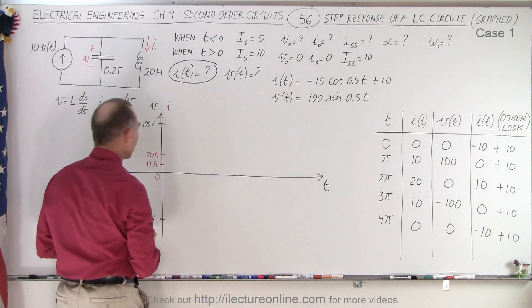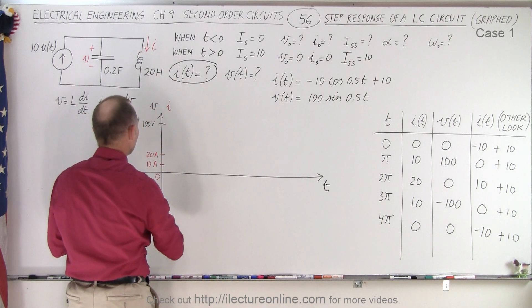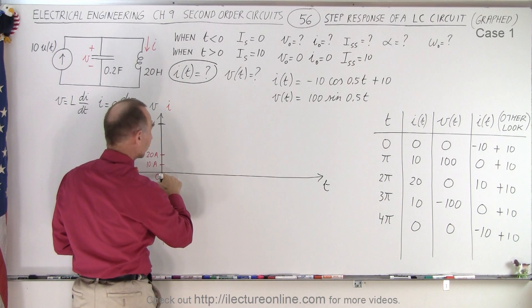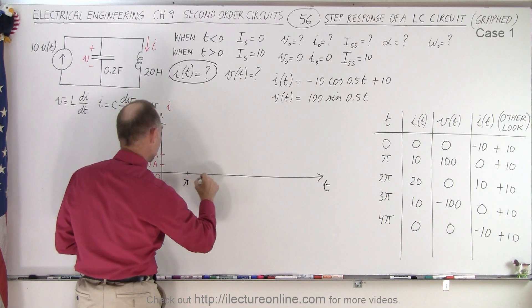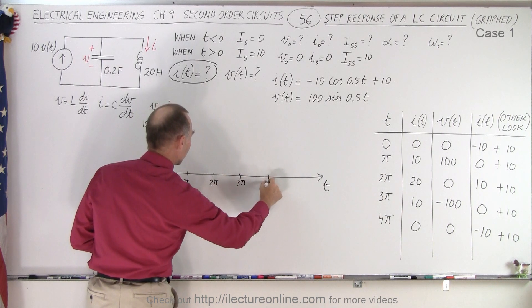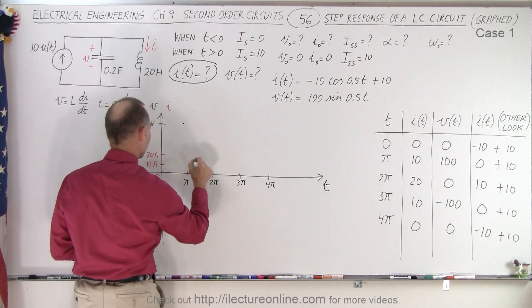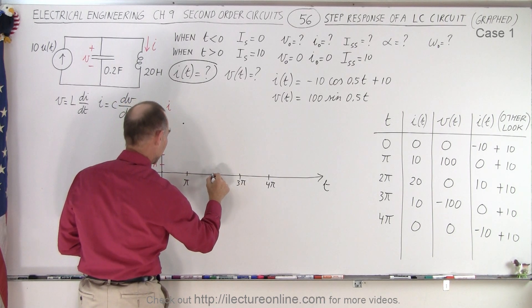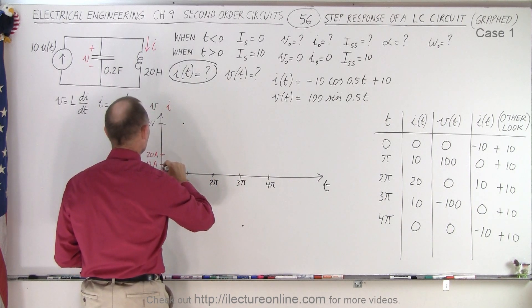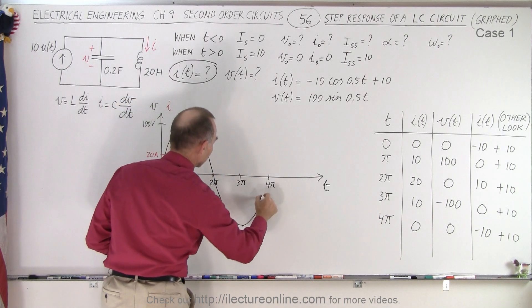Let's first graph the voltage. At t=0, voltage is 0. Setting up the axis with π, 2π, 3π, and 4π: at π the voltage is 100 volts; at 2π we're back to 0; at 3π we're at −100 volts; and at 4π we return to 0. So the voltage curve is a smooth sinusoidal wave going from 0 up to 100, back to 0, down to −100, and back to 0.